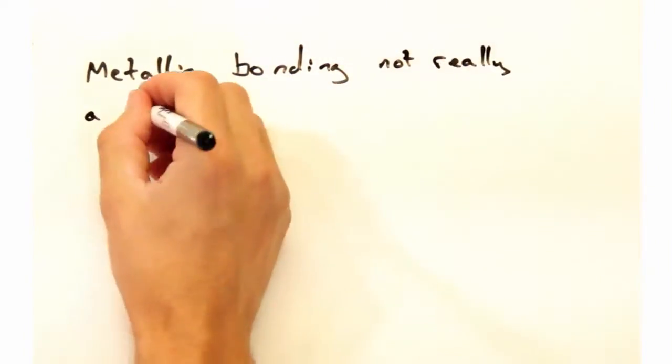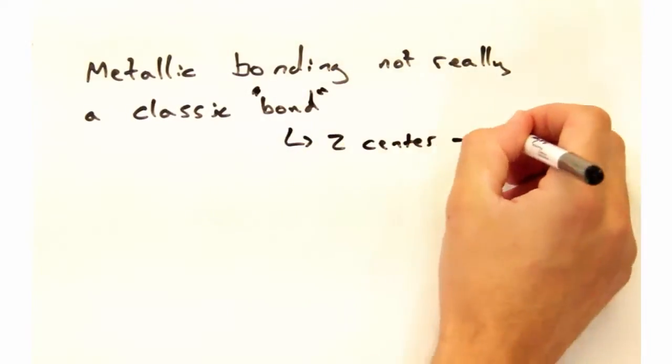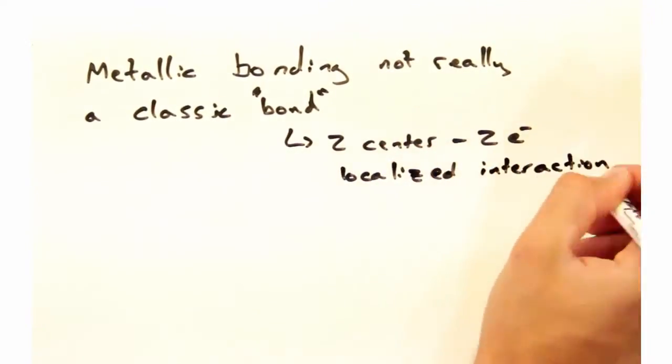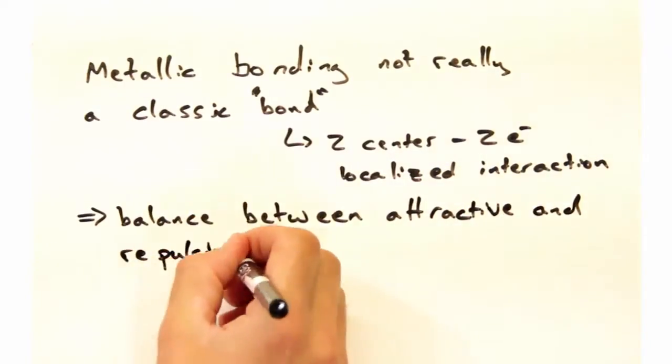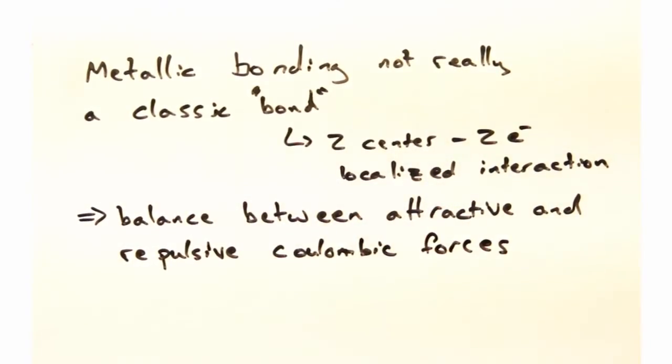So metallic bonding is not really a bond when one normally thinks of a bond. Instead, it seems to be a balance between attractive and repulsive coulombic forces. Yeah, so now that we have metallic bonding relatively well described, let's take a look at another type of bond, which arises from intermolecular forces between dipoles.